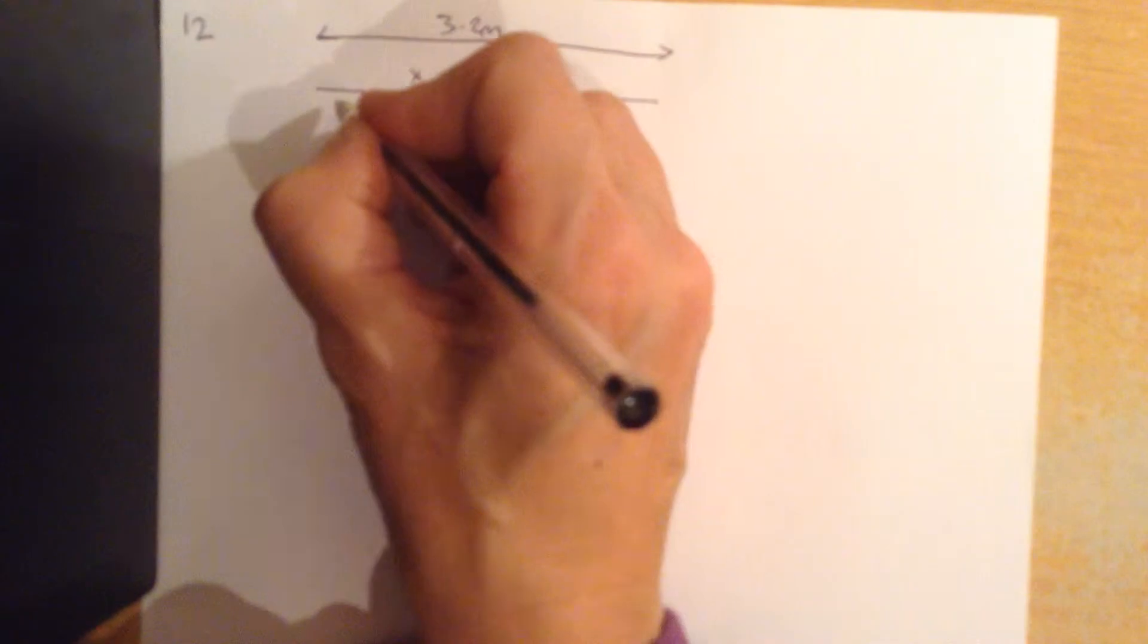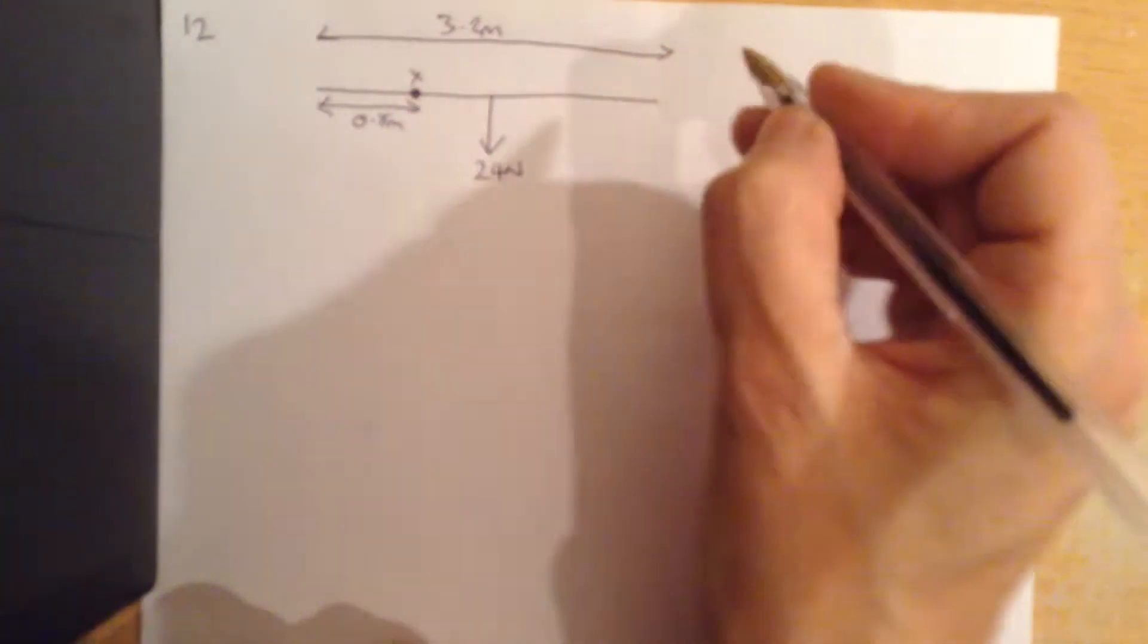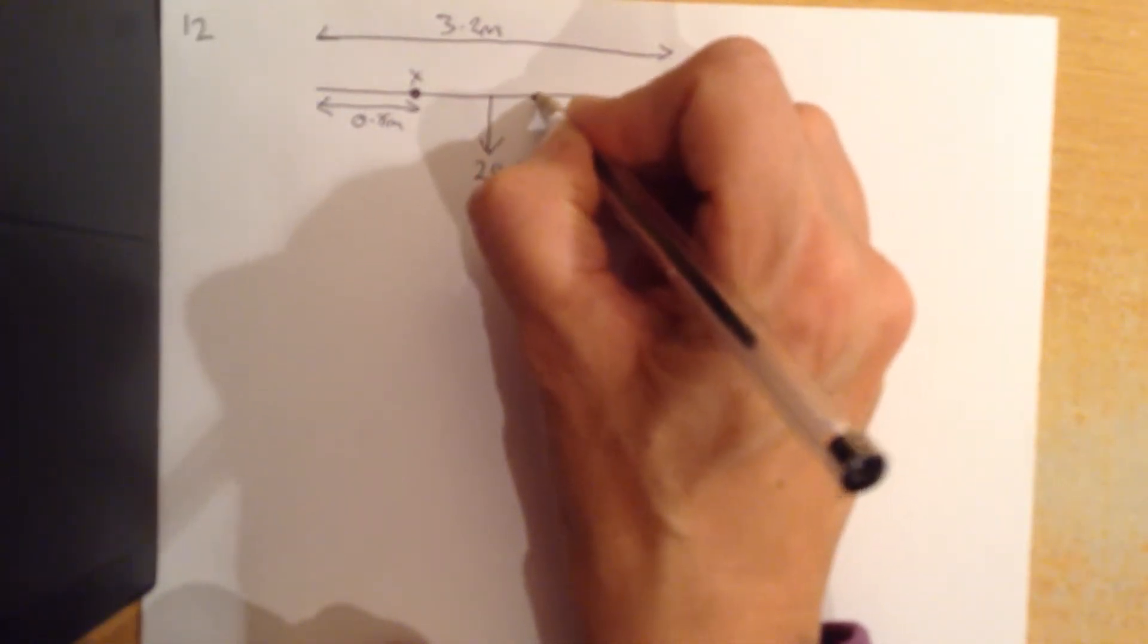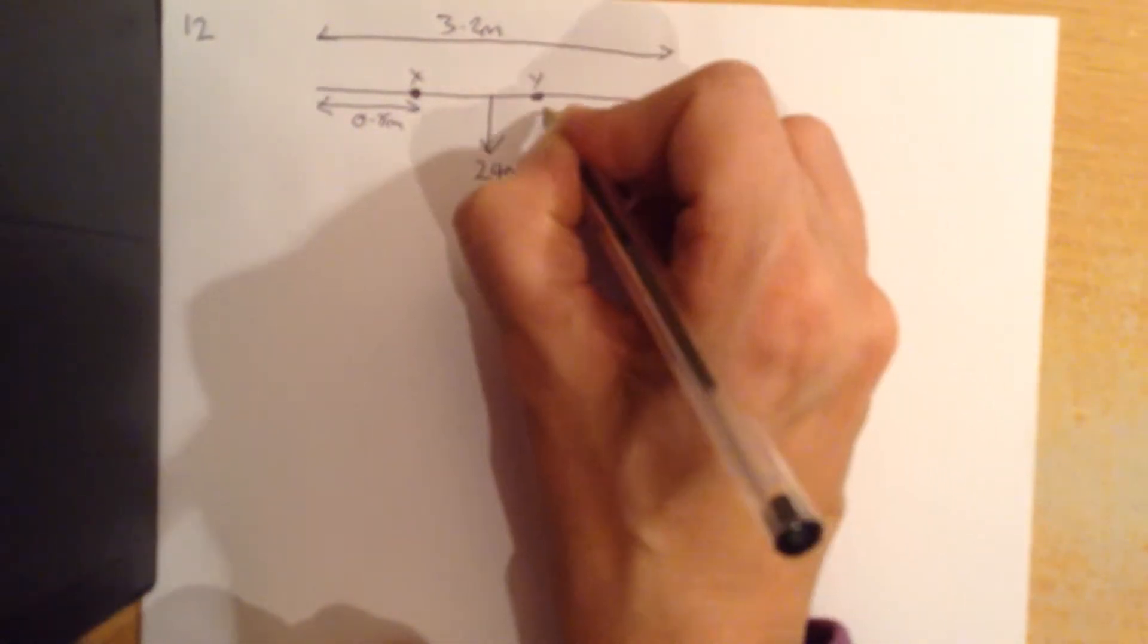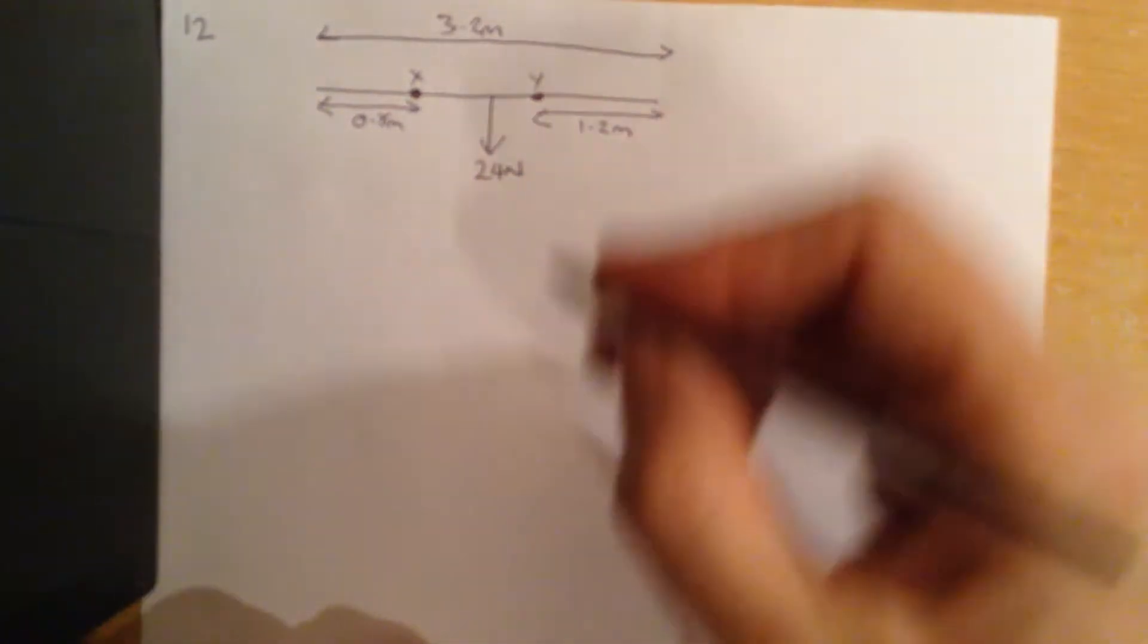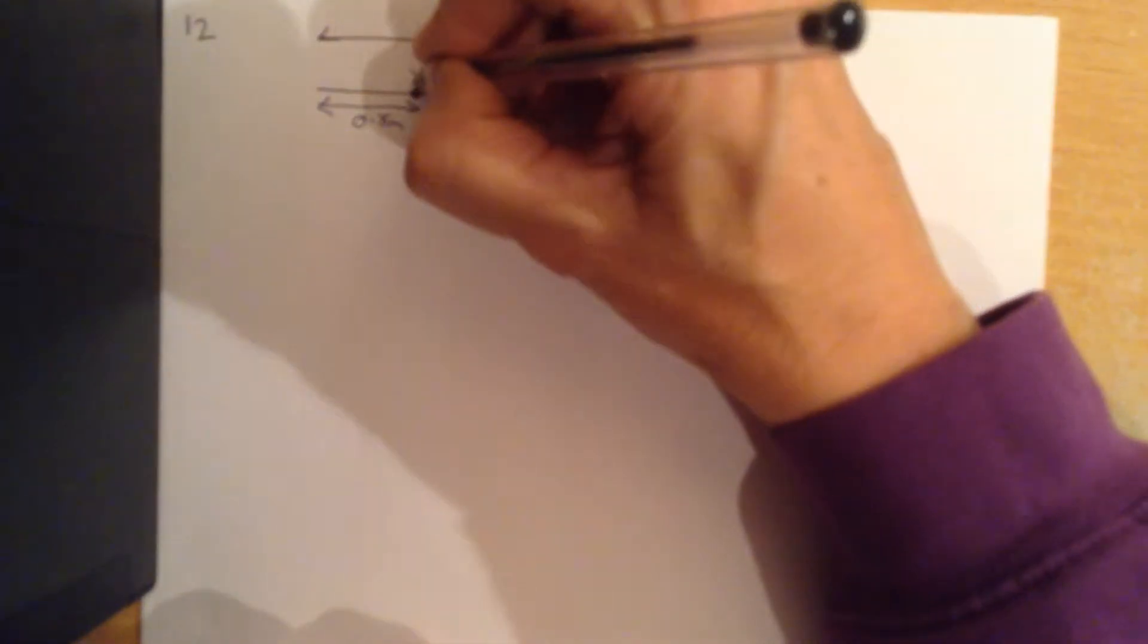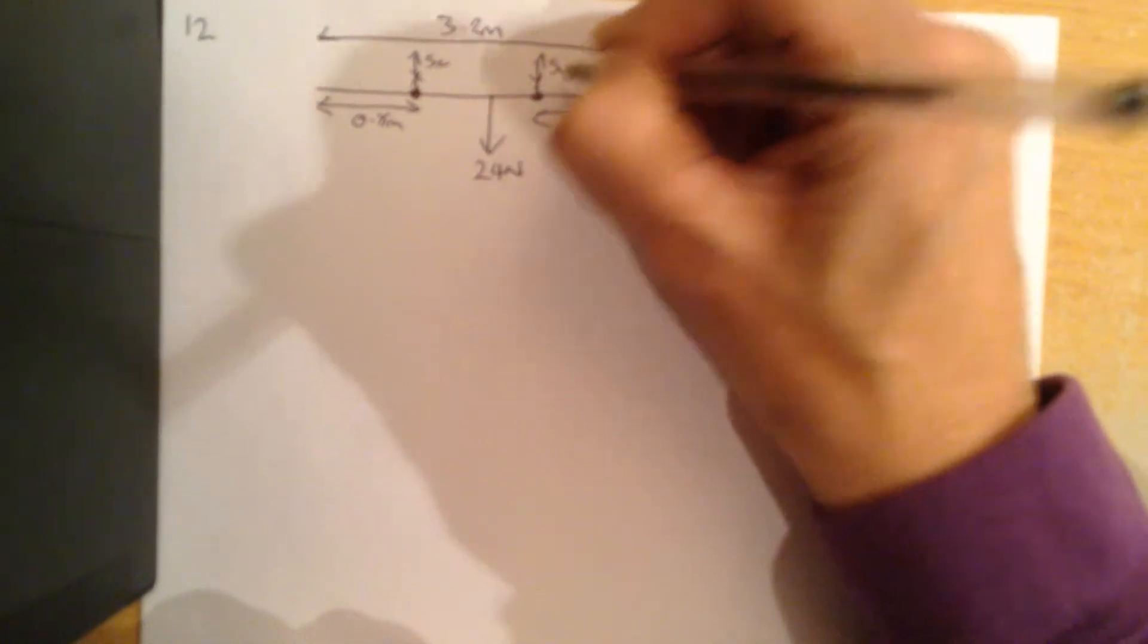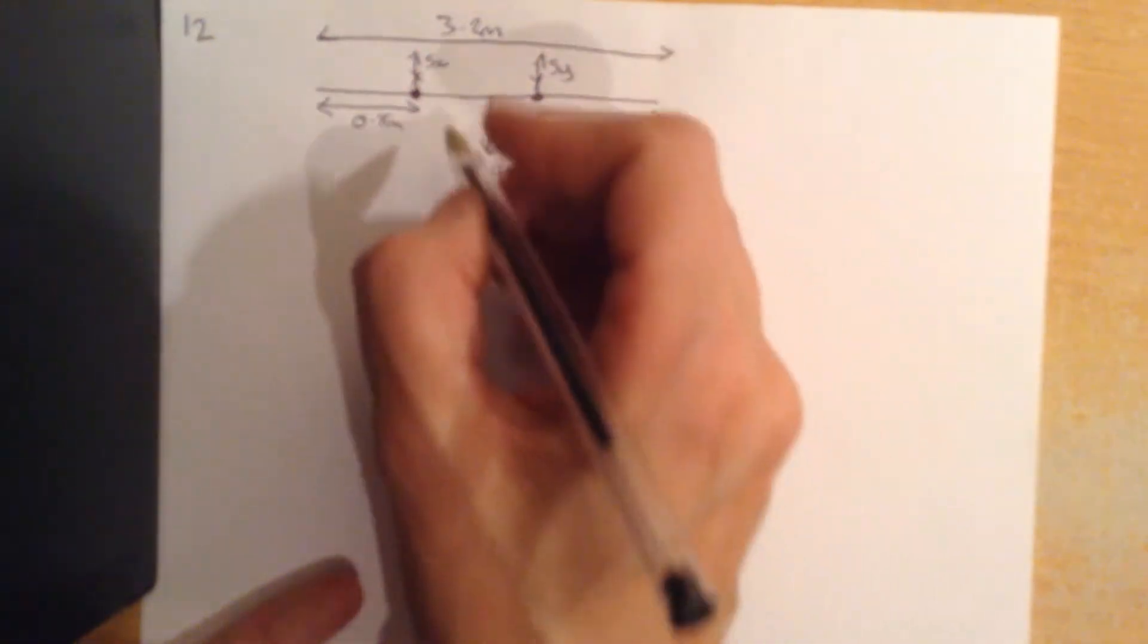that's X, and this one Y is a distance 1.2, so there's going to be a support force up here and up here, SX, SY.